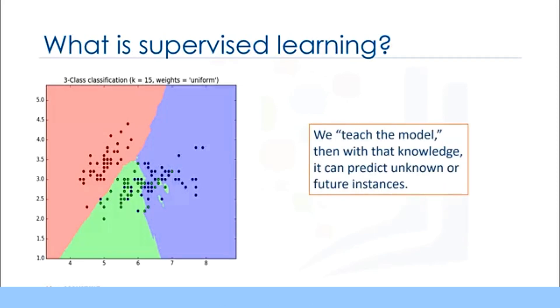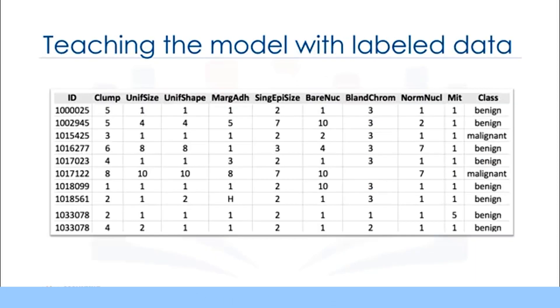We do this by teaching the model. That is we load the model with knowledge so that we can have it predict future instances. But this leads to the next question which is how exactly do we teach a model? We teach the model by training it with some data from a labeled data set. It's important to note that the data is labeled.